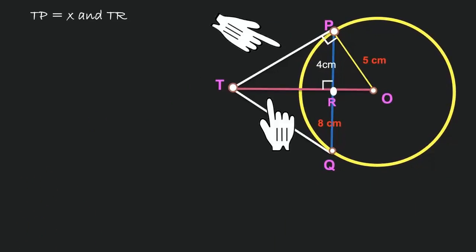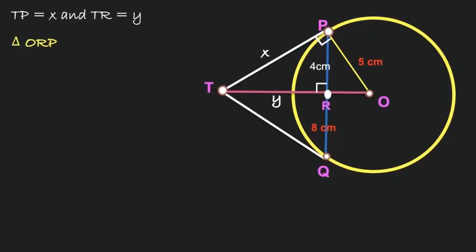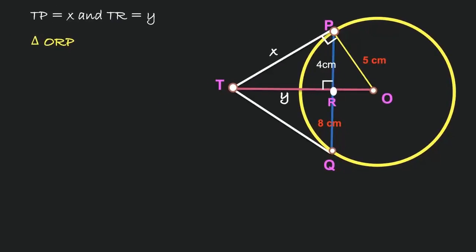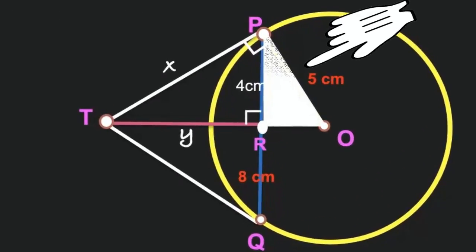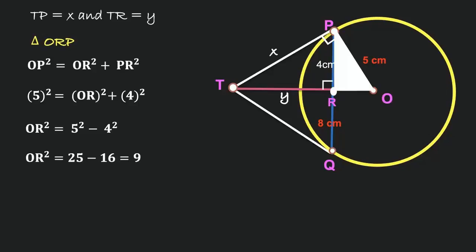Let TP equal x and TR equal y. In triangle ORP, it is a right-angle triangle with OP as the hypotenuse. By using Pythagoras theorem: OP² = OR² + PR², so 5² = OR² + 4². Therefore OR² = 25 - 16 = 9, and OR equals 3 centimeters.